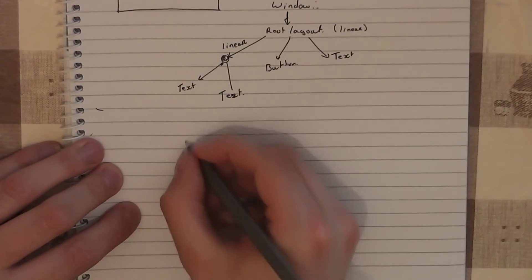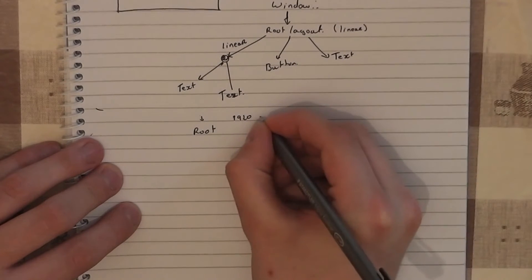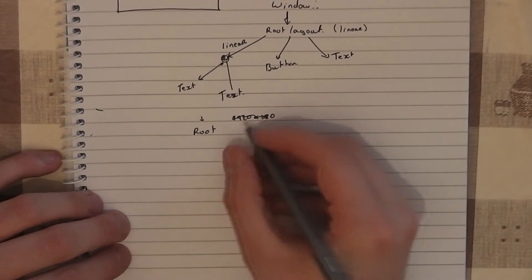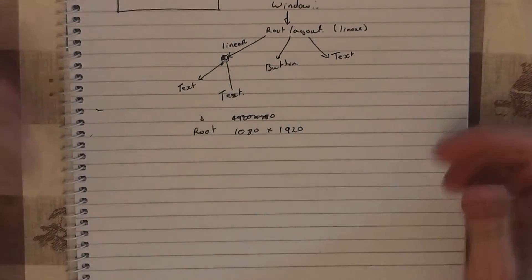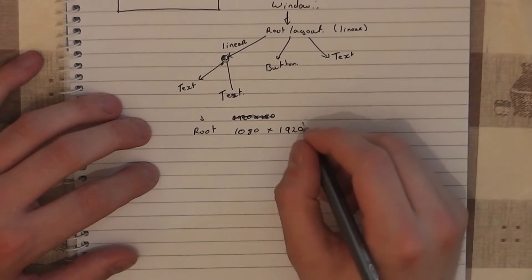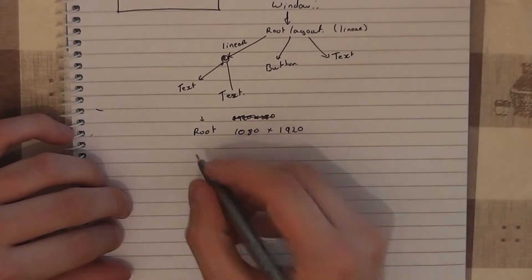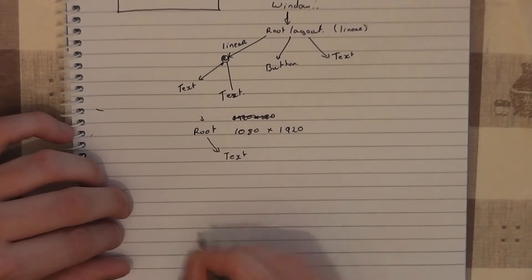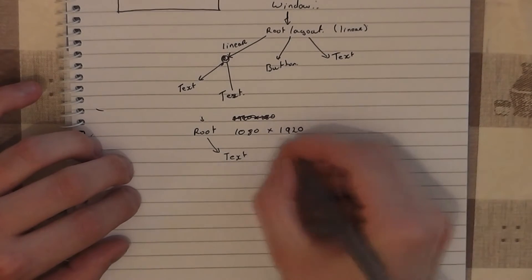The window talks to our root layout and says: I am this size — 1080 by 1920 pixels, assuming full screen. You are allowed to fill me. The root layout then has to figure out what to do from there. A linear layout will then talk to each of its child views and ask them to measure. It says: you have 1080 pixels in width, but you are unspecified in the height department.